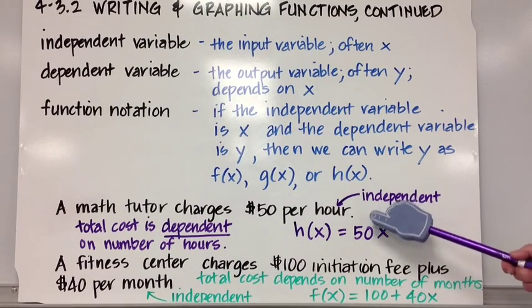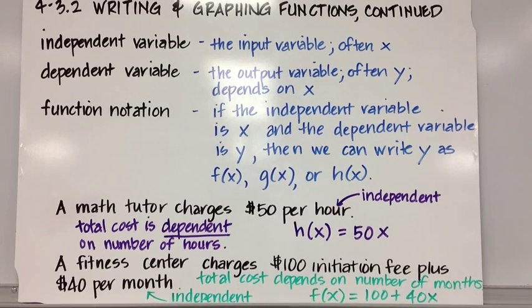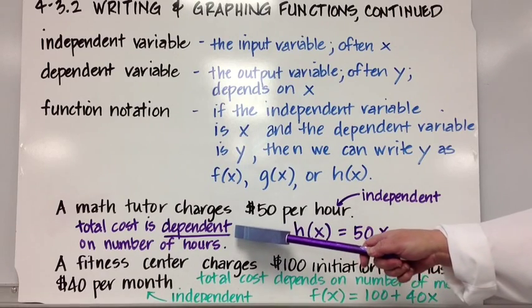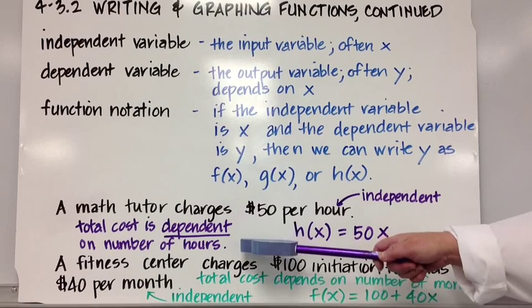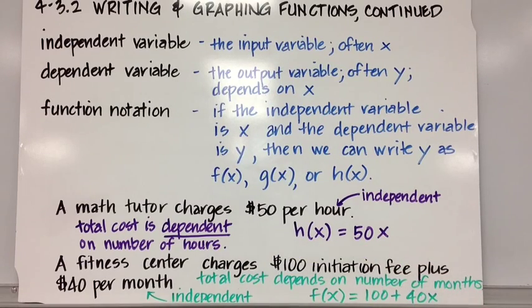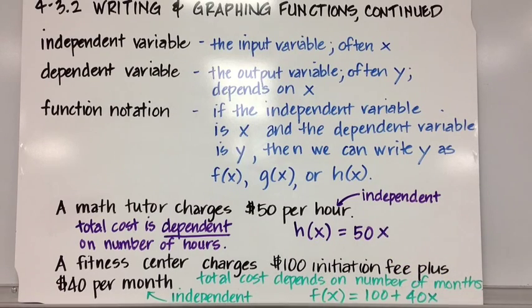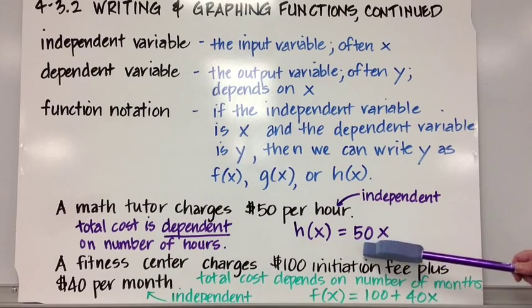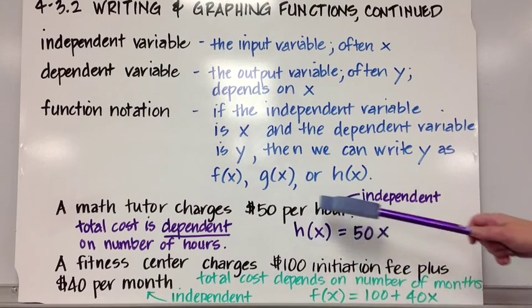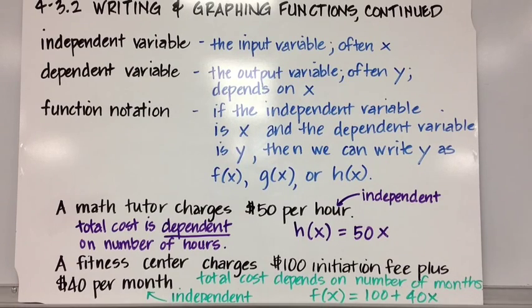Let's say you have a math tutor who charges $50 per hour. The hour is the independent variable. The number of hours that the tutor helps you determines the total cost, which is the dependent variable, because the total cost depends on the number of hours. So if x is the number of hours, then h(x) = 50x. The dependent variable is 50x; it depends on how many hours you work.